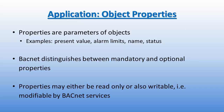Properties are parameters of objects. Some examples of properties would be the present value, alarm limits, name, and status. BACnet specifies 123 properties of objects. Three properties — object identifier, object name, and object type — must be present in every object.